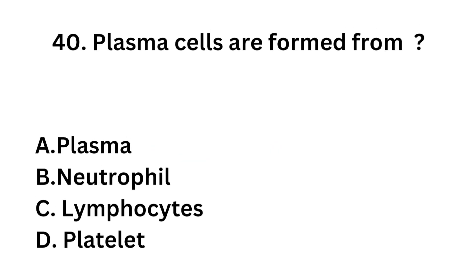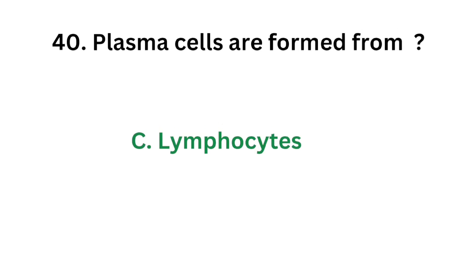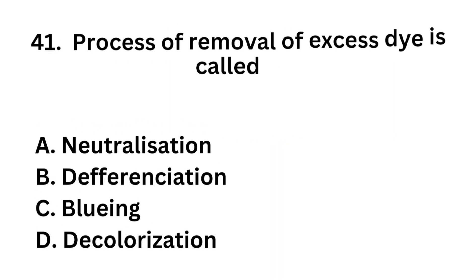Question number 40: Plasma cells are formed from which cell type? Option A: Plasma. Option B: Neutrophil. Option C: Lymphocytes. Option D: Platelet. The correct answer is Option C: Lymphocytes. Plasma cells are formed from lymphocytes — specifically B lymphocytes.